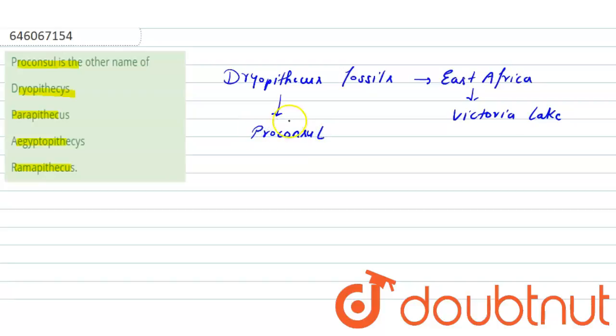Proconsul walked on four legs and were direct ancestors of modern day apes.